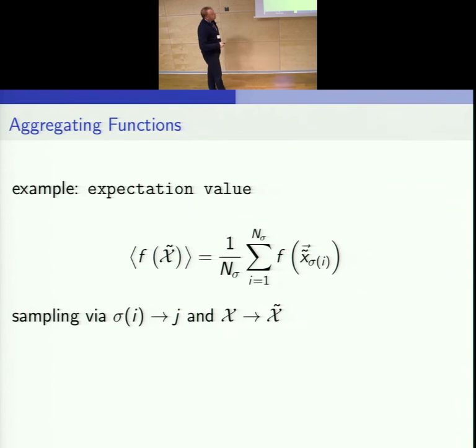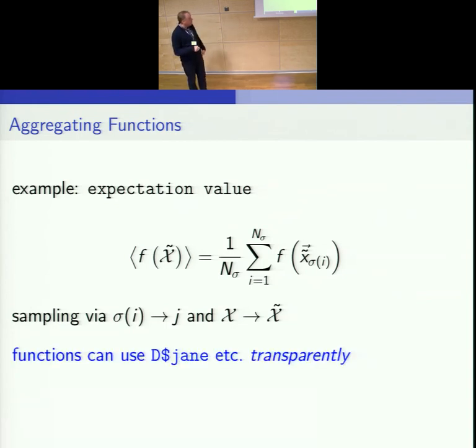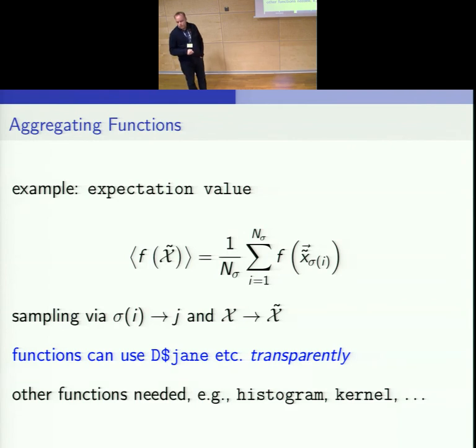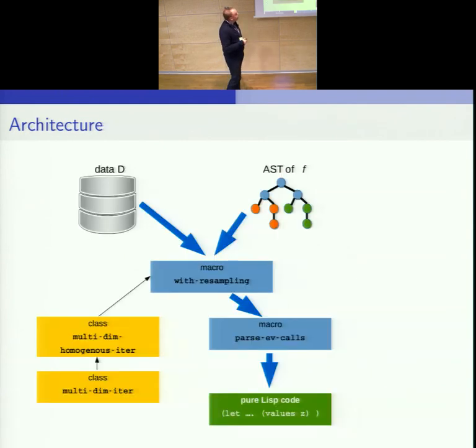There are two things that need to be done in the future: aggregating functions. The typical one is doing an expectation value, which is just the arithmetic mean of the sample. The sampling is actually contained in the lookup table. However, what we do here is that the F uses the abbreviation by name of those variables transparently from outside. But we need other functions like a histogram or fitting a kernel internally. That's not included yet, but should be very easy. There is an appropriate macro for that.